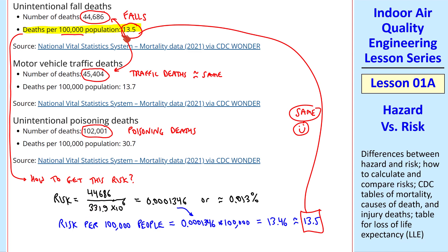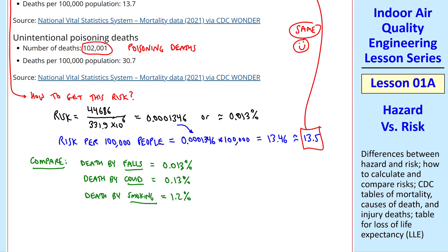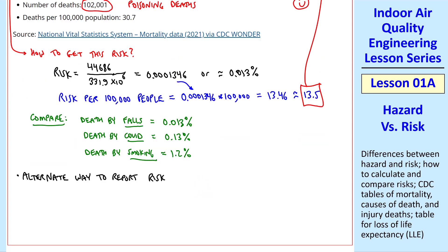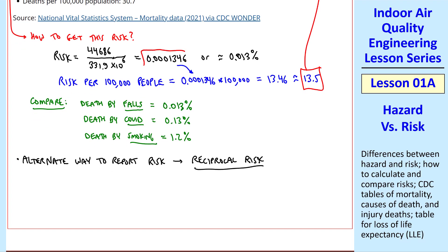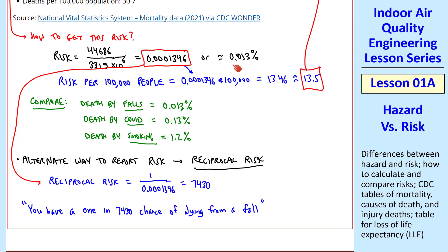Let's compare the three numerical examples we've discussed. Death by falls is 0.013%. Death by COVID is 0.13%. And death by smoking is 1.2%. Each of these increases by approximately a factor of 10. There's an alternate way to report risk: the reciprocal risk, where we take one over the actual risk number. For falls, that's about 1 in 7,430. If you see a statement like this, take the reciprocal to get the actual risk, then multiply by 100 to report it as a percent.